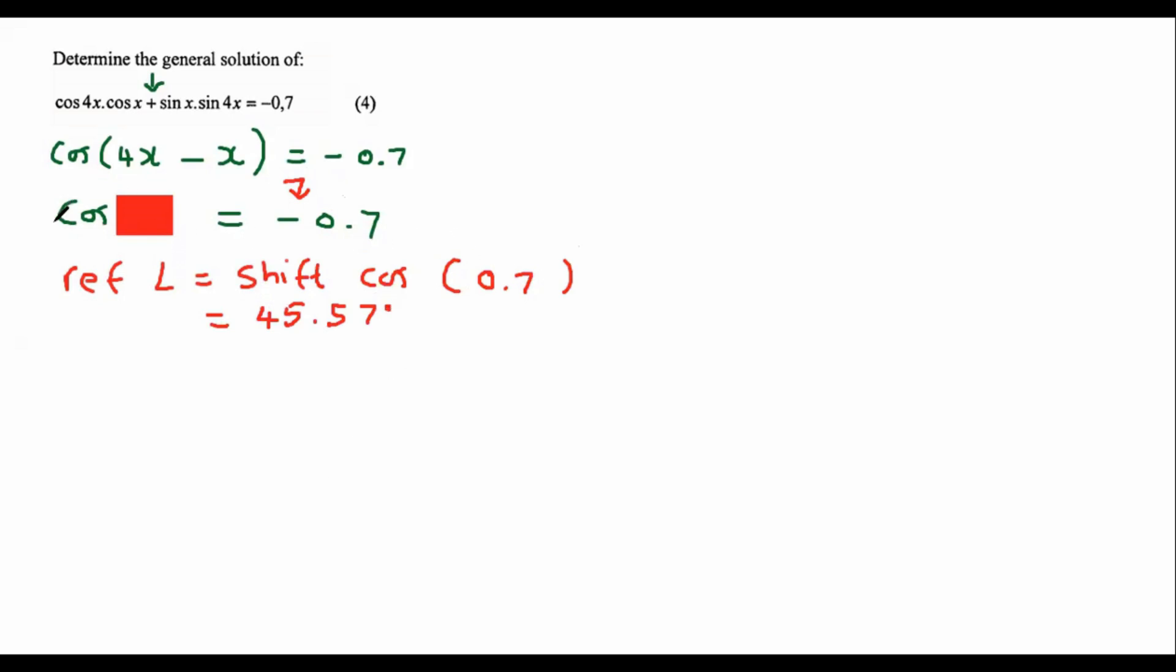Now it is telling us that cos is negative. If you know on your cos diagram, cos is negative in quadrant number 2 and quadrant number 3. And so those are the quadrants that we are now going to work in. Quadrant number 2 and quadrant number 3. This will be quadrant 2. This will be quadrant 3.